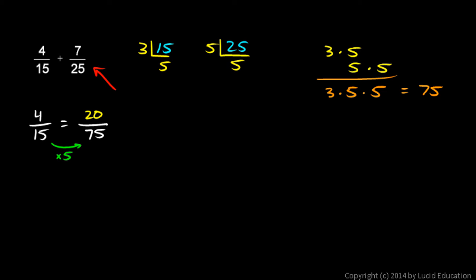And then I rewrite 7 25ths also. 7 over 25 will be written with a denominator of 75. 25 times what gives me 75? 25 times 3, so we also multiply the 7 times 3 and that gives me 21. So 7 25ths is equal to 21 75ths, and 4 15ths is equal to 20 75ths. I can just add these two numbers because they're equivalent to 4 15ths and 7 25ths.